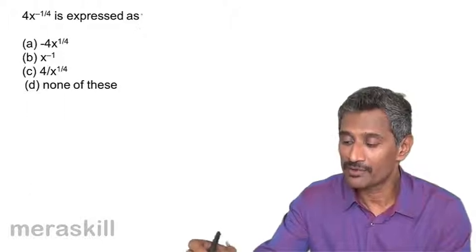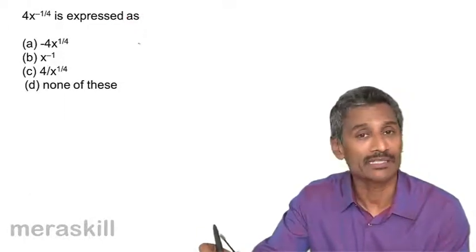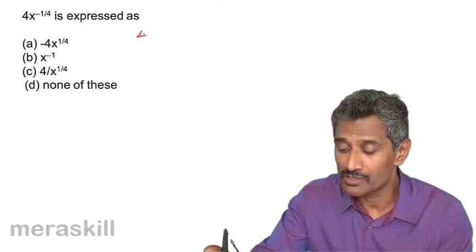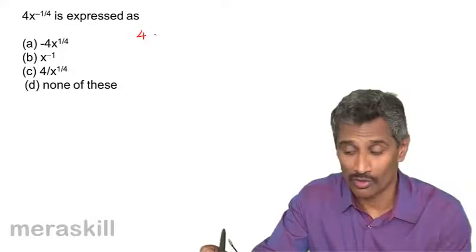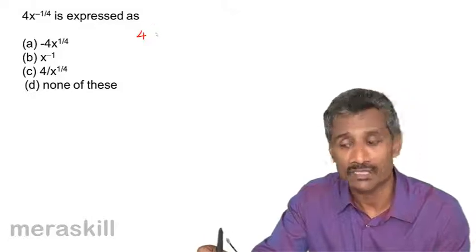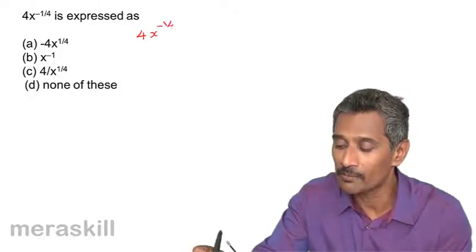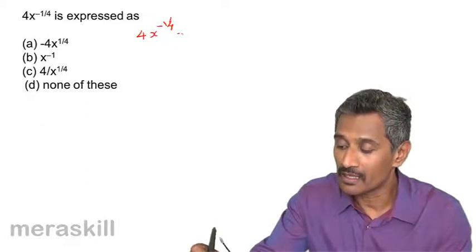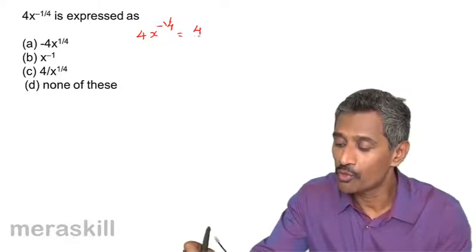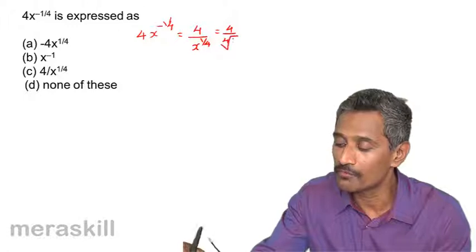The first example: 4x raised to minus 1 by 4 is expressed as what? Now nothing is going to happen to the coefficient 4. Remember the rule: a raised to minus x is 1 upon x raised to a. So 4x raised to minus 1 by 4 is nothing but 4 upon x raised to 1 by 4, which can also be written as 4 upon the 4th root of x.